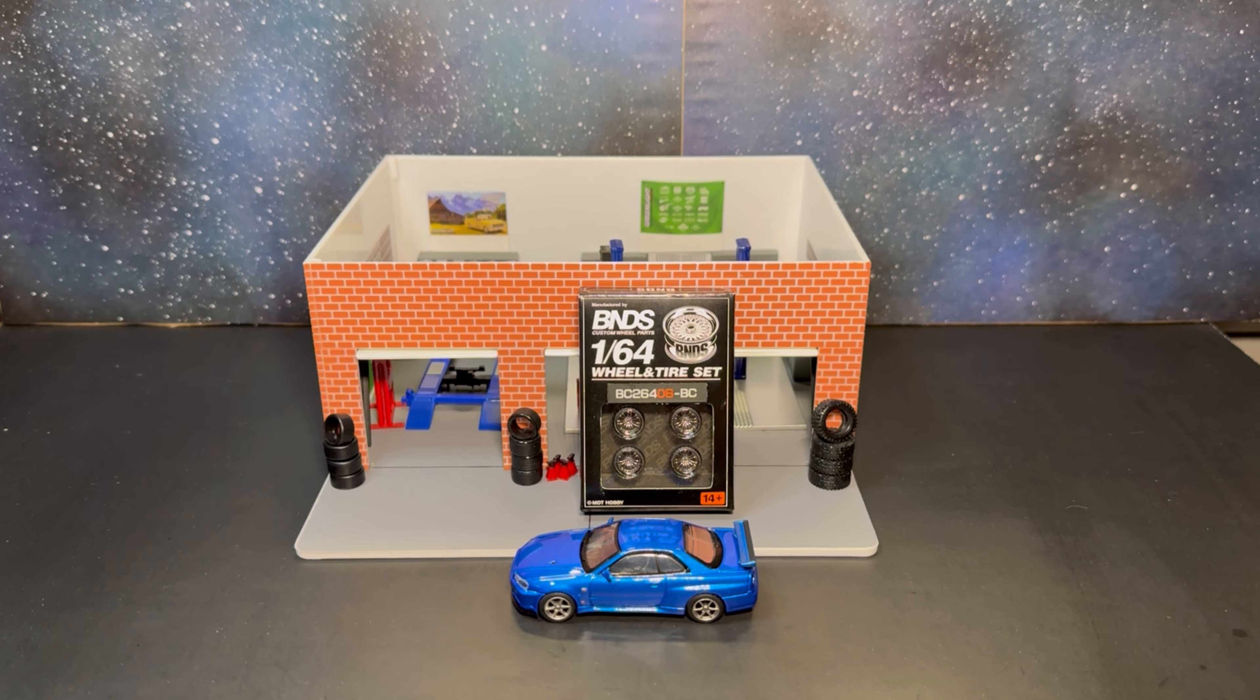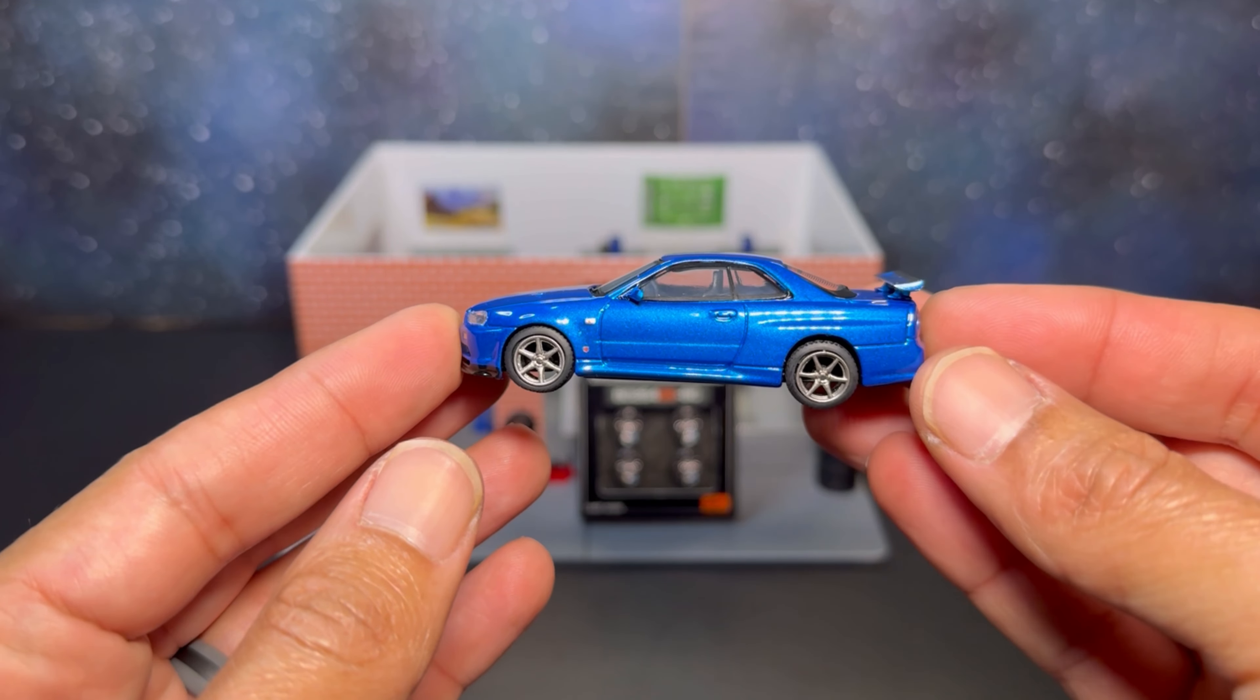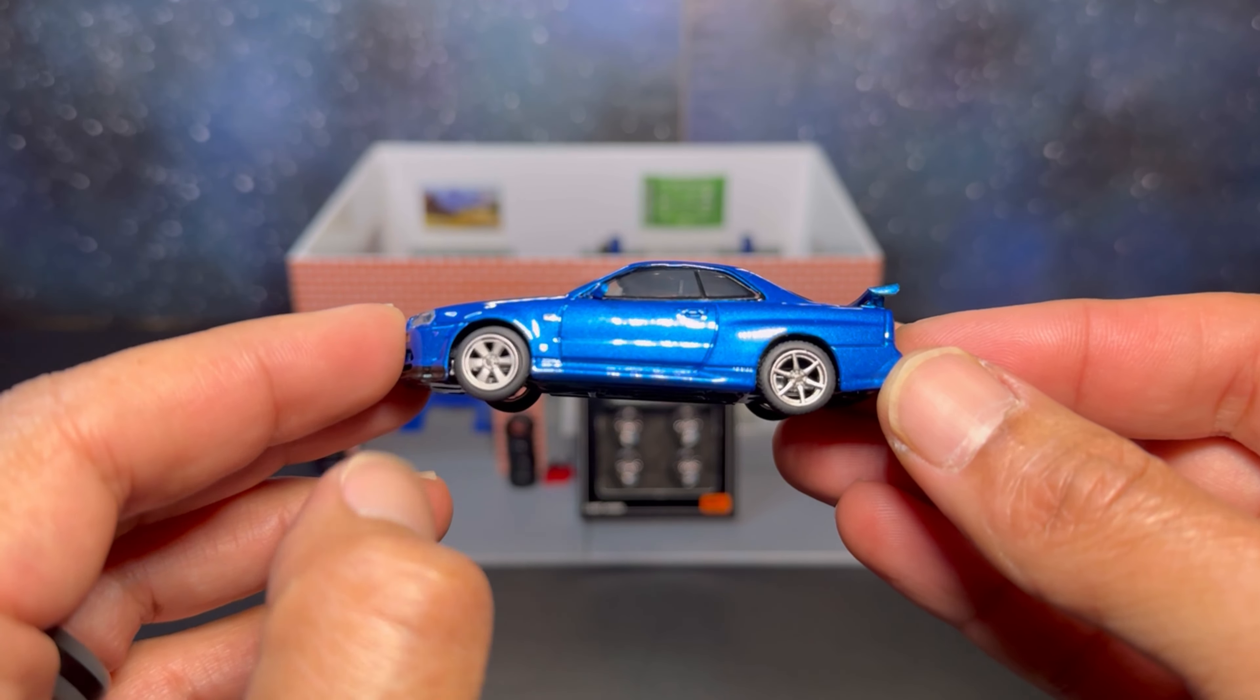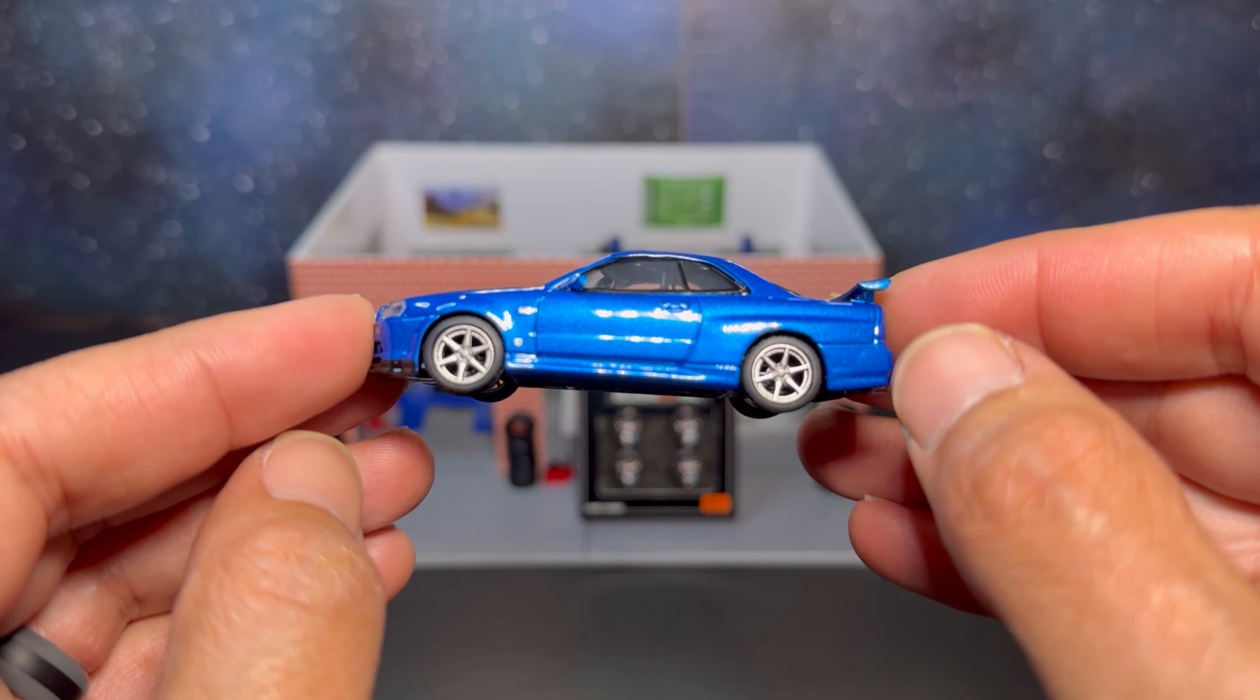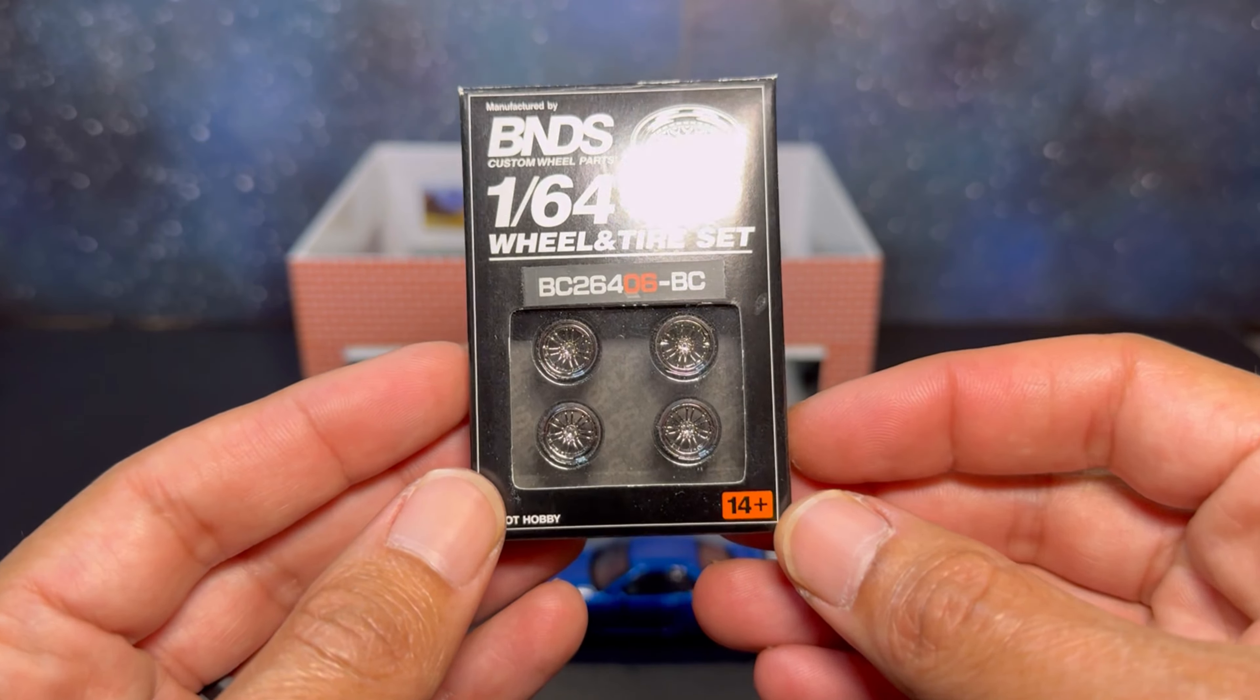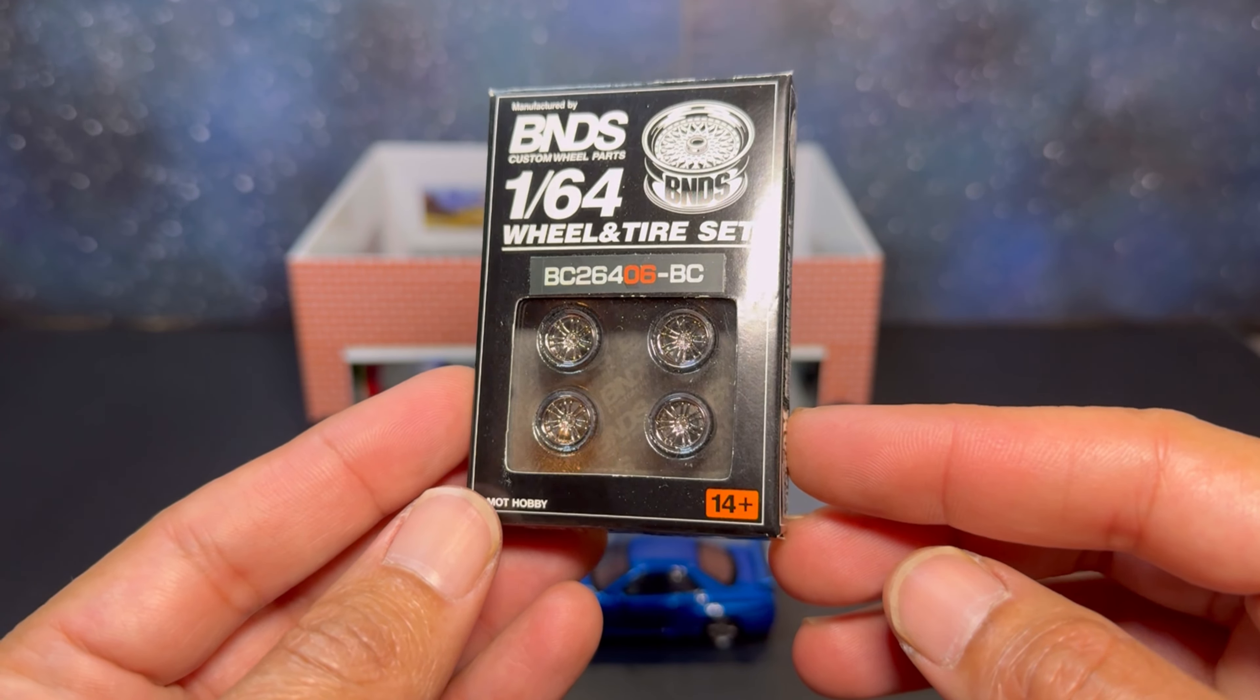We are here today with a wheel swap. This is going to be my second wheel swap on a premium diecast. So today we have the mini GT R34 V-Spec 2. So this is, yes, a mini GT. This one just has stock wheels on it, nothing special. So I had picked up a set of these BNDS wheels, which are actually really nice wheels.